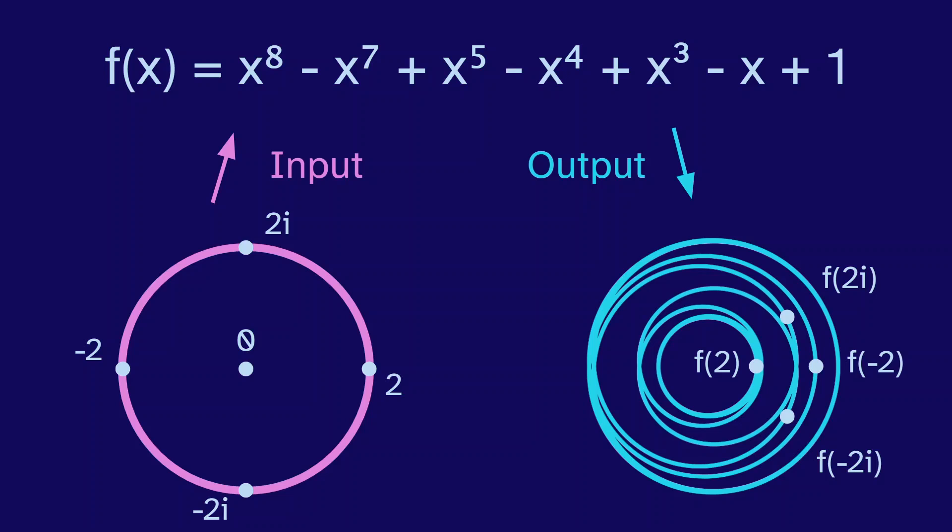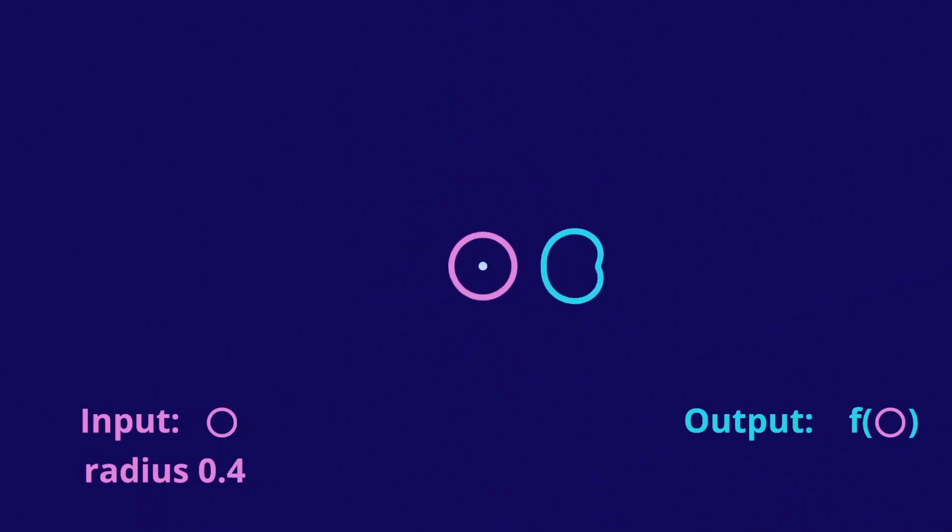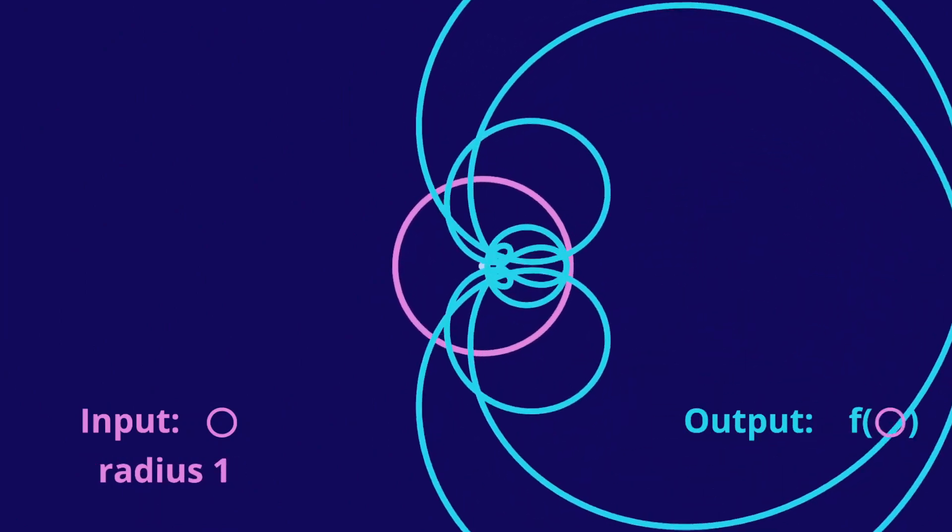We input each point into the polynomial, and then graph the output. So now we see some outputs of the polynomial, but maybe we'd like to see all outputs. We can do this with an animation. Starting with an input of radius 0, and going to radius infinity.